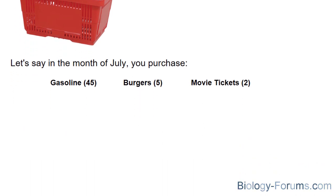So what I have for you in this tutorial are three common items that you might buy in the month of July. Let's say that in the month of July of 2015, you bought 45 liters of gasoline at a price of $1.10 per liter. The next year, July 2016, you bought 45 liters of gasoline at $1.30 per liter, five burgers at a rate of $2.50 per burger.